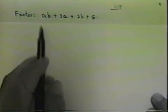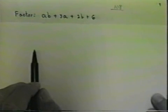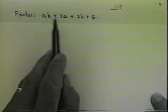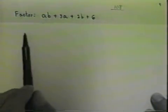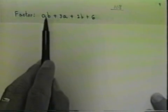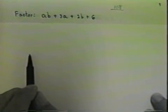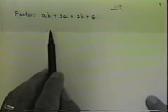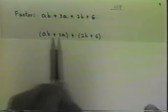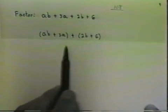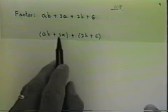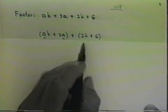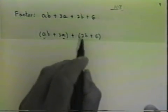In some cases, I do not have a common factor at all, but I can create a common binomial factor. Let's look at this example: ab plus 3a plus 2b plus 6. I have nothing common to all four terms. However, if I group them by pairs, I have ab plus 3a grouped and I have 2b plus 6 grouped. Now notice ab plus 3a has a common factor of a. 2b plus 6 has a common factor of 2.